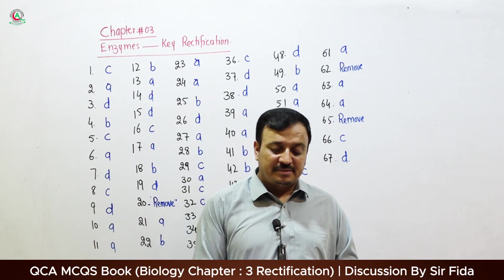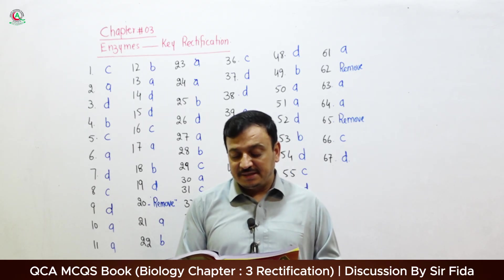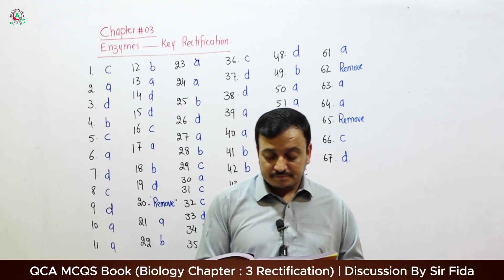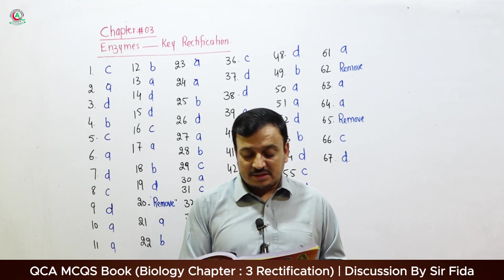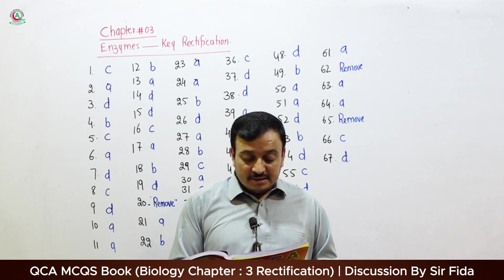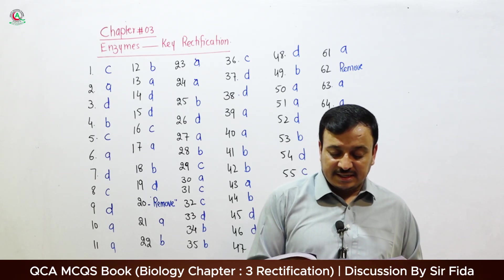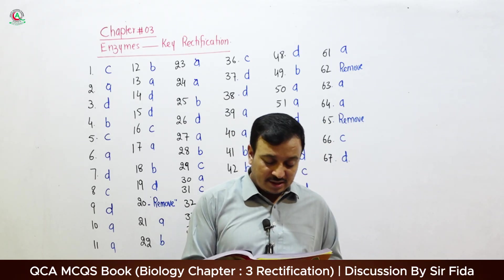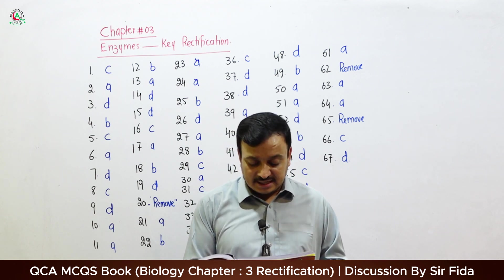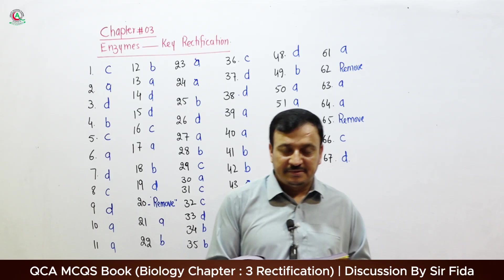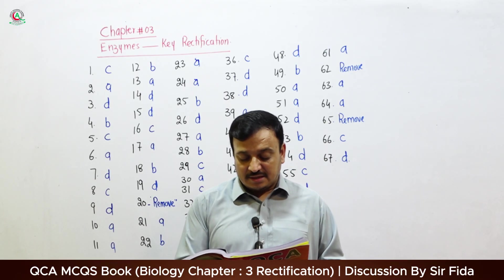Question 11: The word 'enzyme' consists of two Greek words — 'En' meaning 'inside' and 'Zyme' meaning 'yeast'. Question 12: The word enzyme was proposed by — correct answer B: Wilhelm. Question 13: The first enzyme, diastase, was discovered by — correct answer A: Payen. Question 14: Enzyme is actually — correct answer D: All of these.